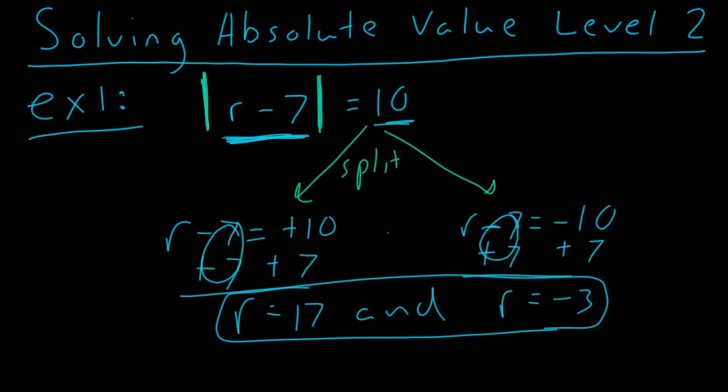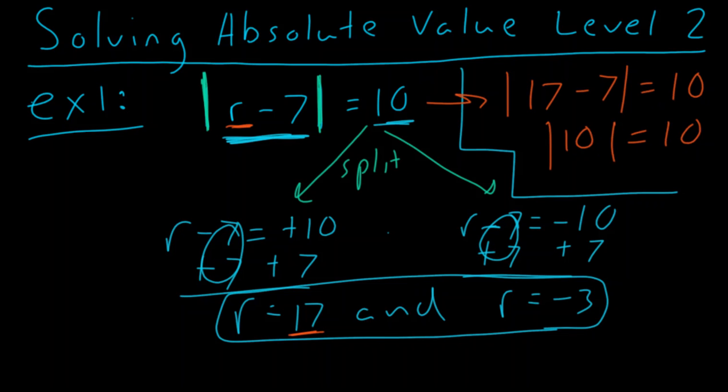Now, what I'm going to also introduce in this video is something called testing out your solution. So let's go back to our original equation. We have the absolute value of r, but let's just test out 17. So we know that r in one case is 17 minus 7. Absolute value equals 10. And let's see, we have the absolute value of 17 minus 7, which is 10. And check this out. The absolute value of 10 is equal to positive 10. Hey, our solution checks out. And in fact, if we plug in negative 3, we would get the same thing.